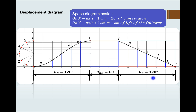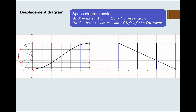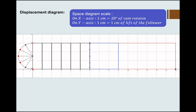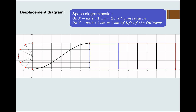Now we will see this construction with the help of animation. One more thing: on the y-axis the scale is 1cm equals 1cm of the lift of the follower. Our lift of the follower is 30mm, that is 3cm, so this vertical distance will be 3cm. As explained, we draw the displacement diagram by dividing the semicircle, drawing vertical lines, then horizontal lines from the given points, and then a smooth curve through the intersection points A, B, C, etc. Similarly for the return stroke, we get this type of construction.